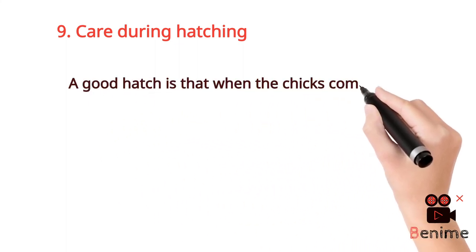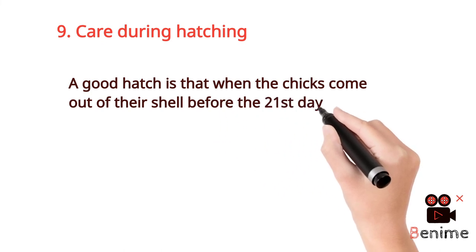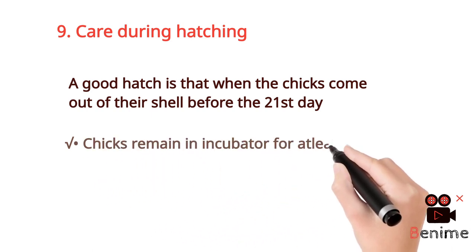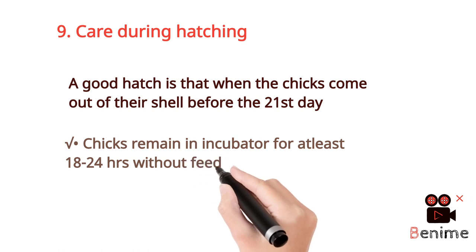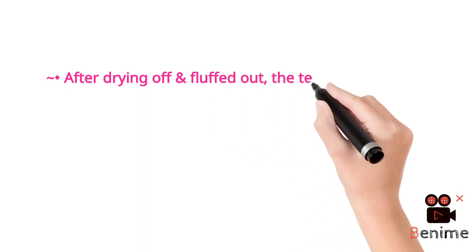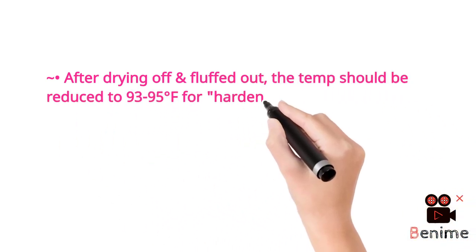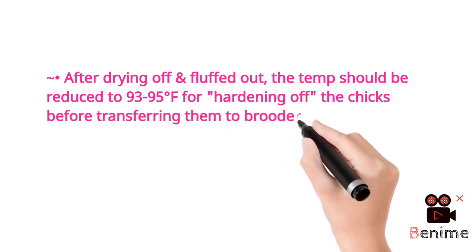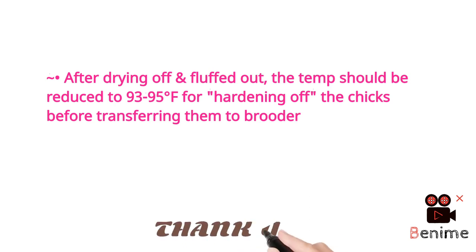The ninth factor is care during hatching. When hatching is in progress, a good hatch is when the chicks come out of their shell before the 21st day. Chicks remain in the incubator for at least 18 to 24 hours without feed; you should not remove the eggs from the incubator until 24 hours. After drying off and fluffing out the chicks, the temperature should be reduced to 93 to 95 degrees Fahrenheit for hardening of the chicks before transferring them to the brooder, to train them how to survive at lower temperatures.